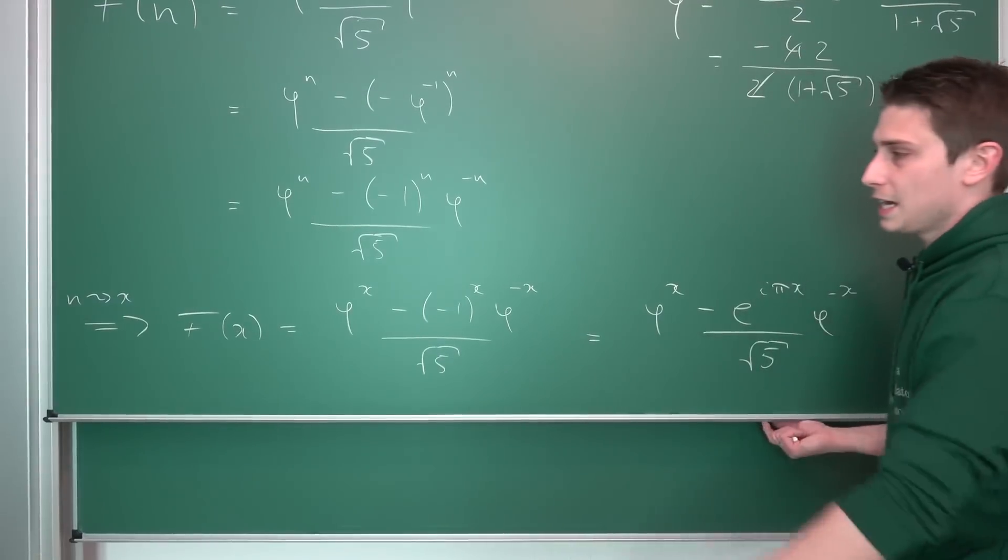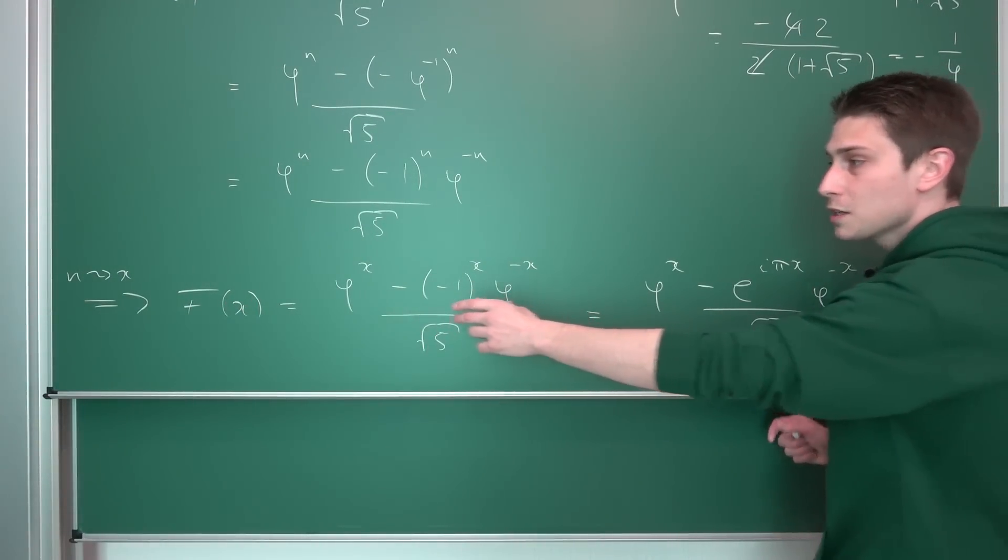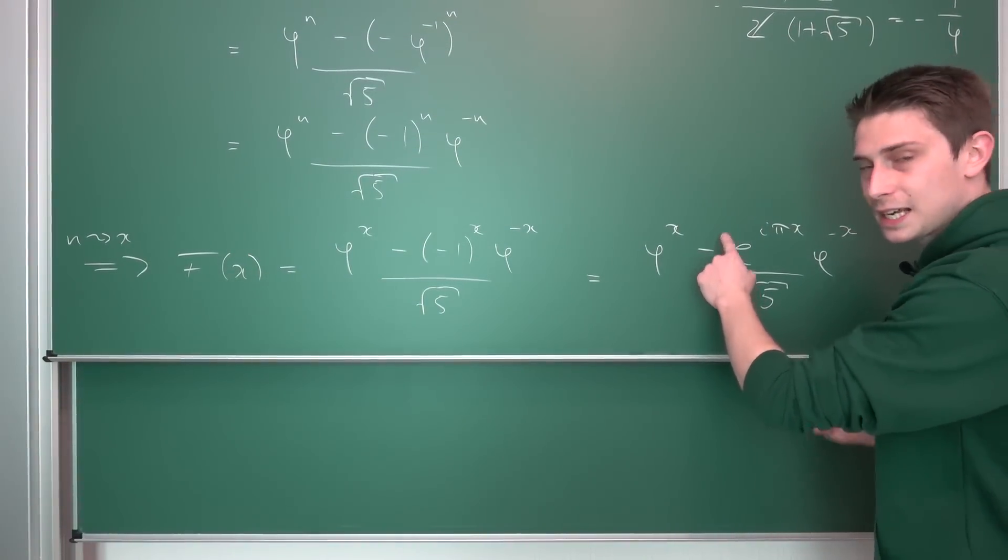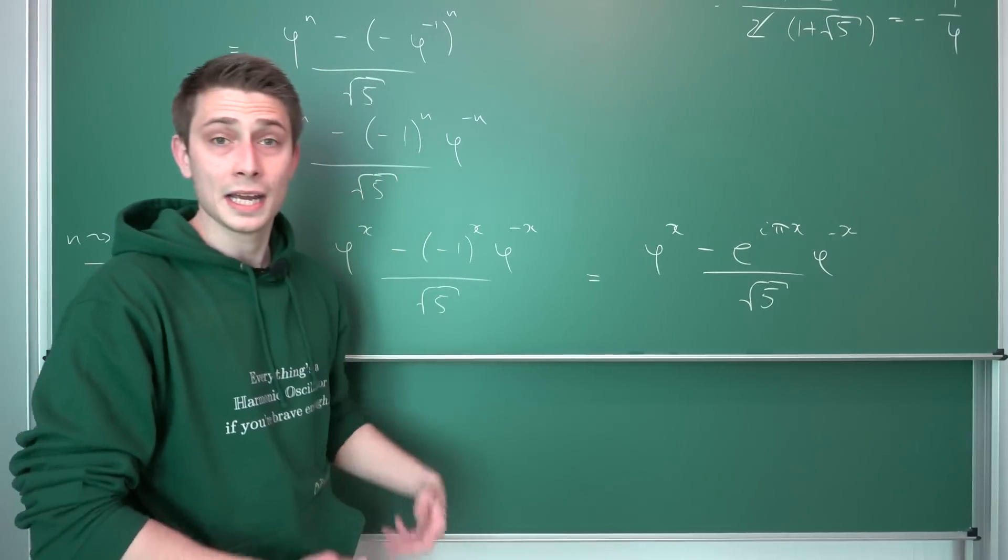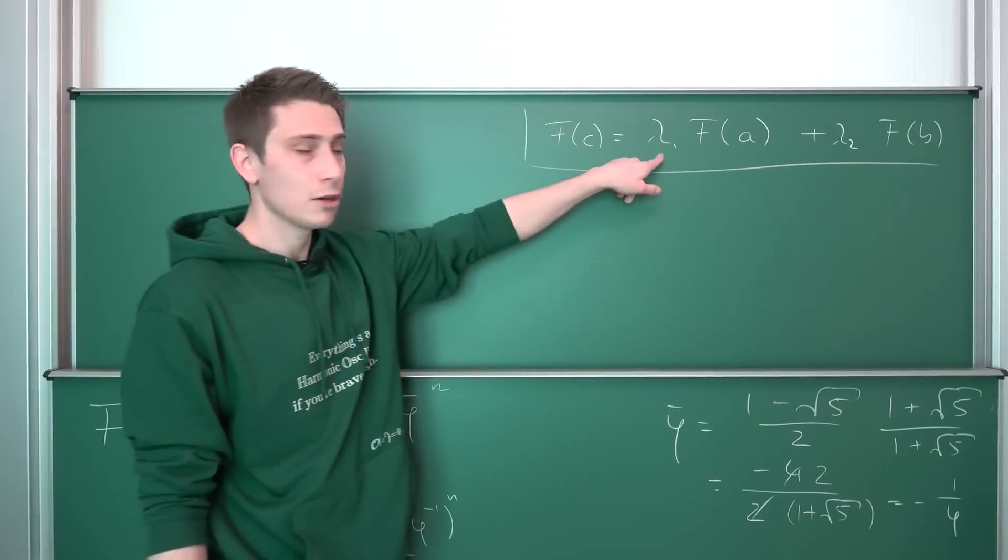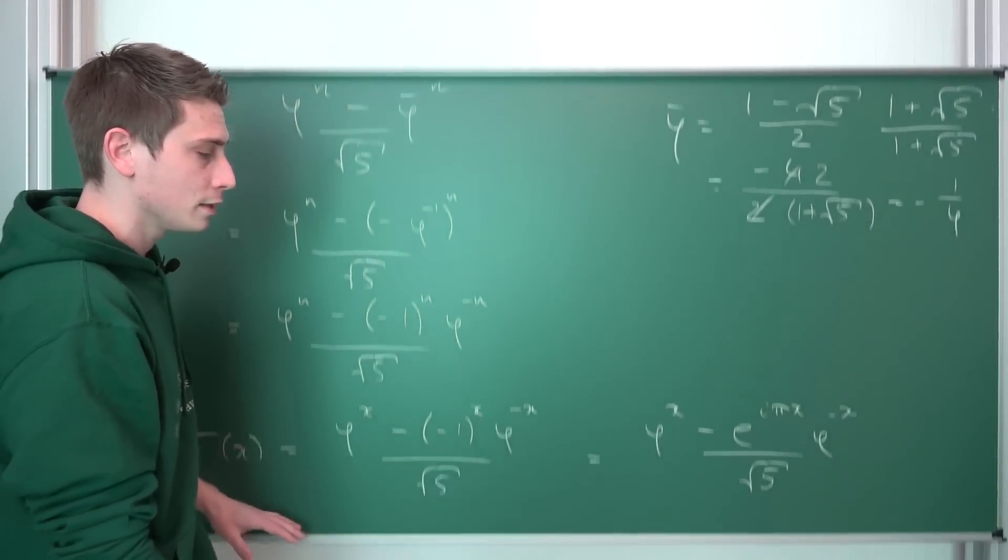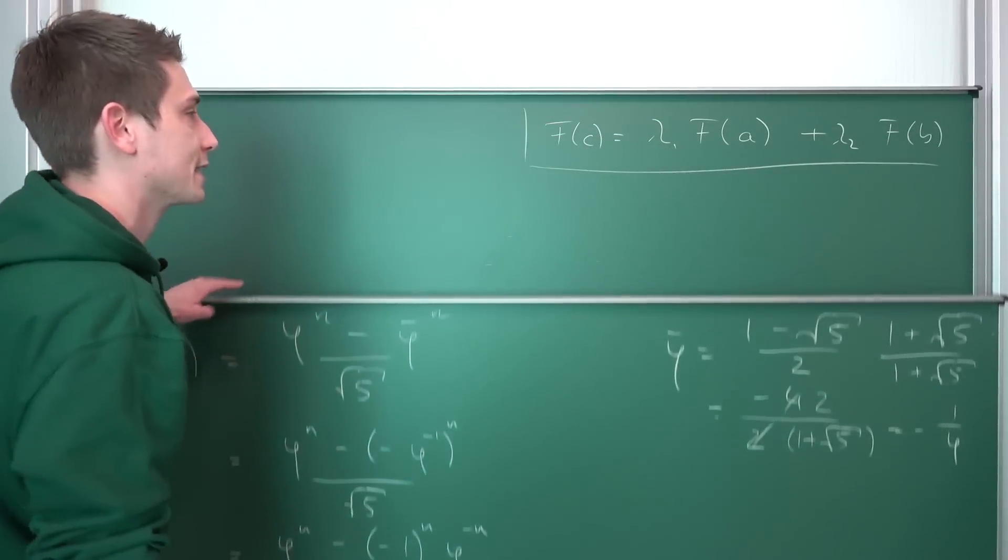What we can do, we can take our f of x, add it to the complex conjugate of f of x. We are going to get rid of exactly the sine part in here. Take a piece of paper, try it out for yourself, and then we are going to average it out. We are going to take a factor of one-half and actually end up with simply the real part of f of x being a solution to the Fibonacci numbers yet again.